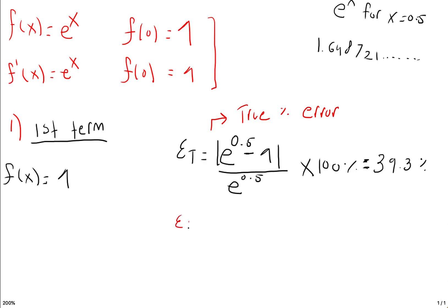Now for the relative percent error: to find it, you use the current term from the Maclaurin series and subtract by the previous term. Since we started with the first term, we can't subtract anything — so the relative percent error (EA) is not applicable here. You can only find the relative percent error for the second term and onwards.